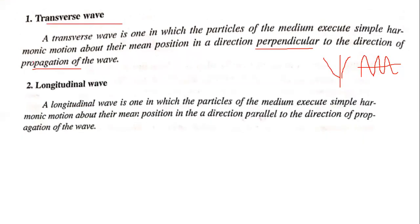A longitudinal wave is one in which the particles of the medium execute simple harmonic motion about their mean position in a direction parallel to the direction of propagation of the wave. Such waves are called longitudinal waves.